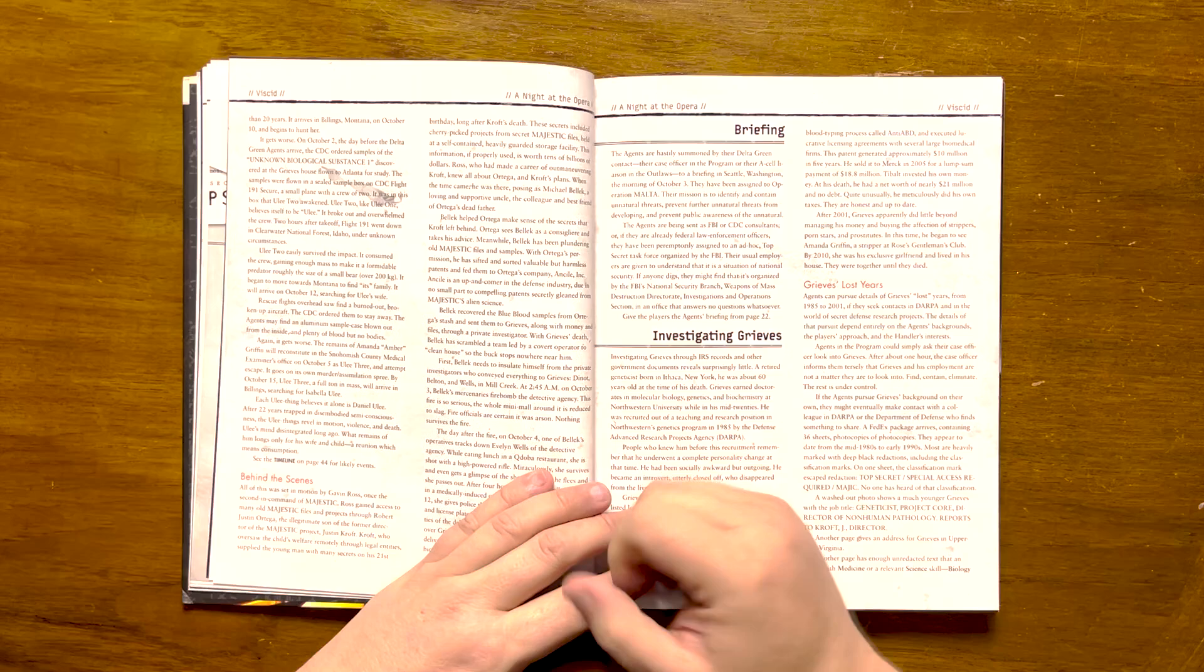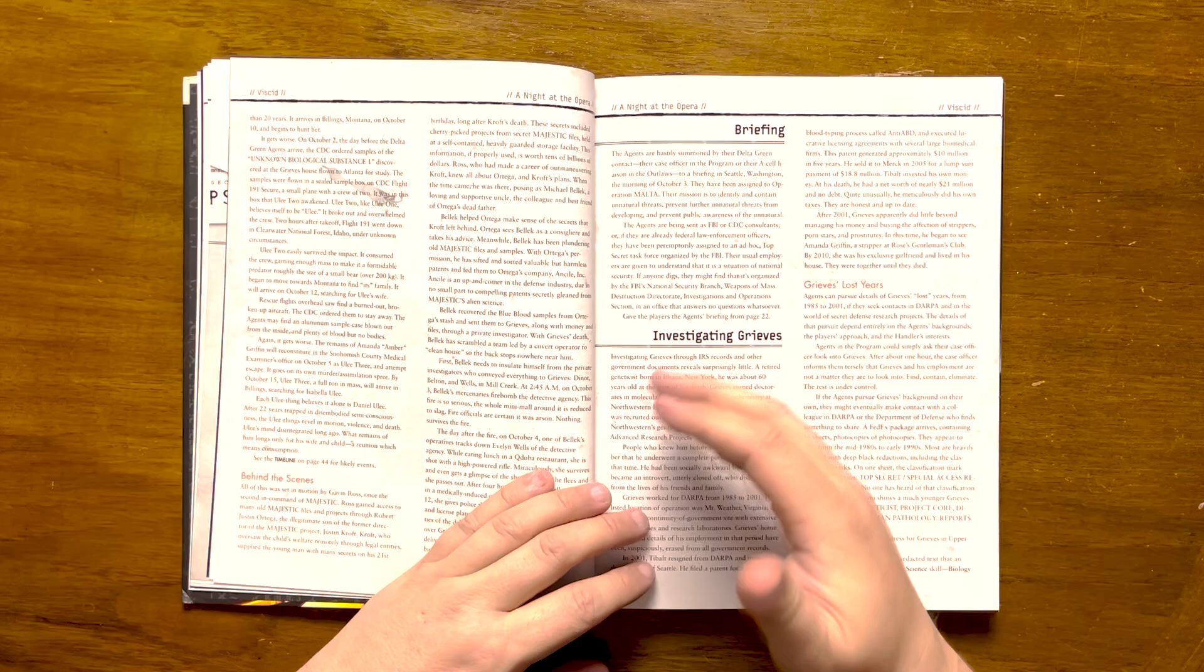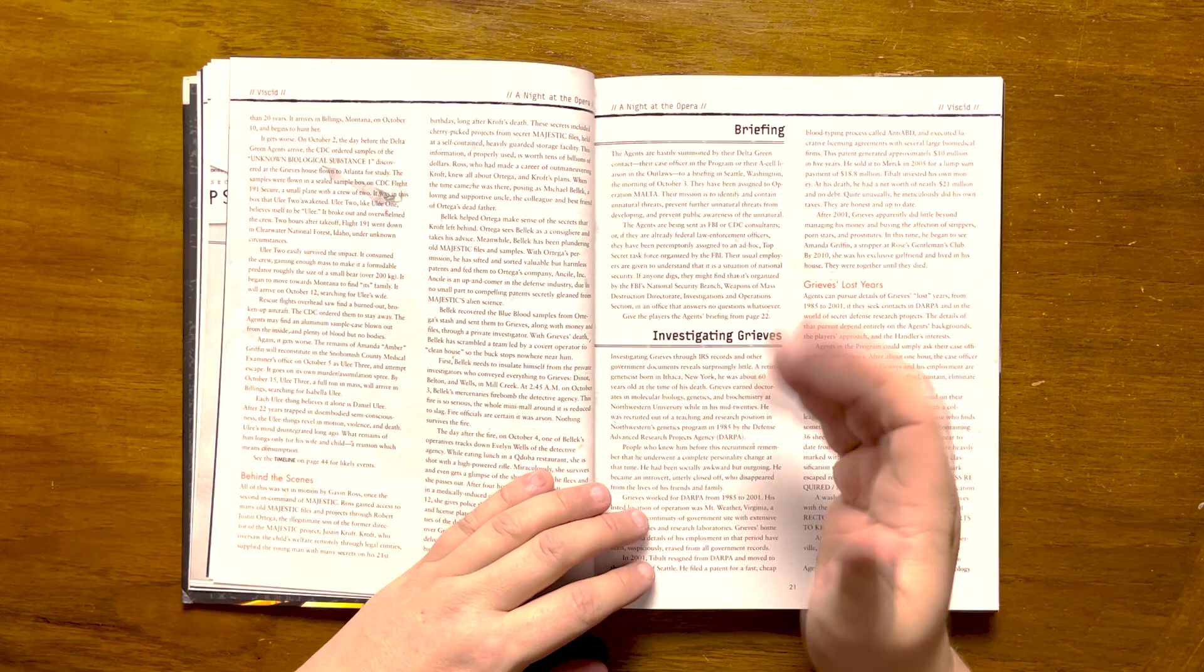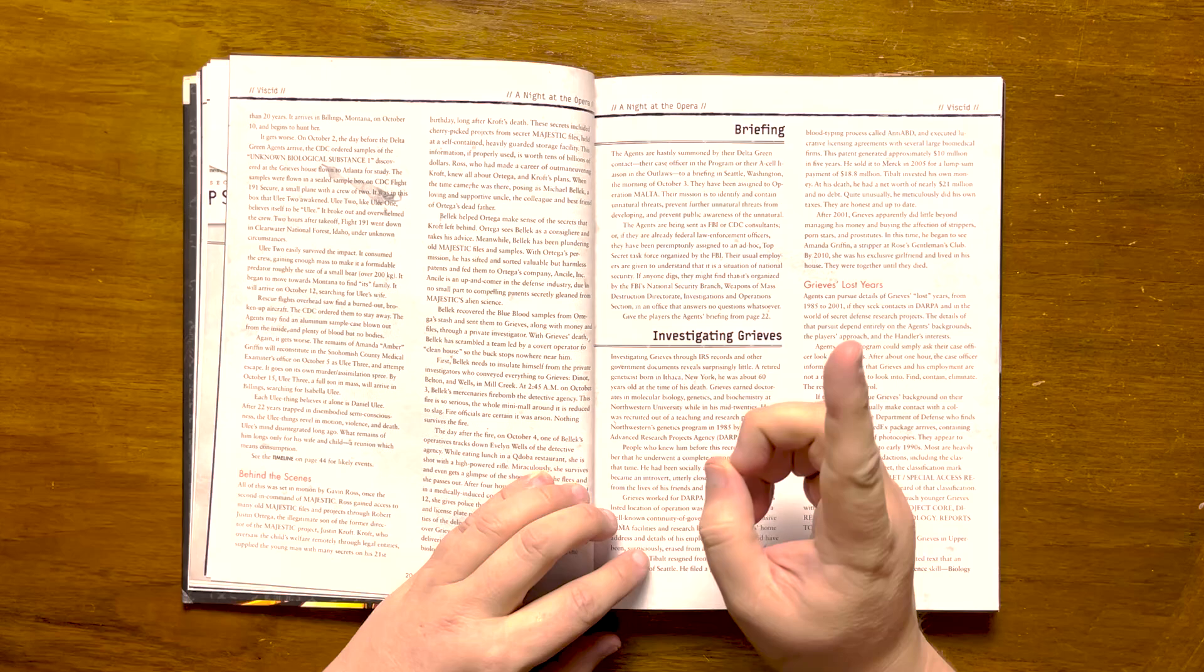Uli thing number two survived the impact and consumed the crew, growing to the size of a small bear, and then began its journey to Montana. All that was found of the plane is a smoldering wreck, lots of blood, but no bodies, and aluminum sample cases blown out from the inside. And again, the situation gets even worse.